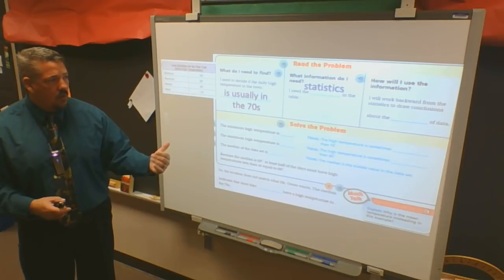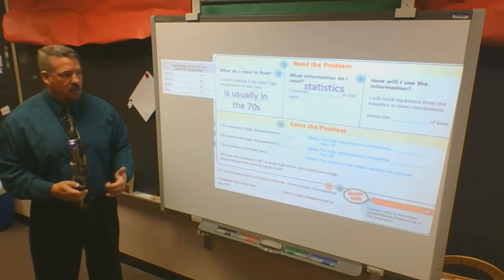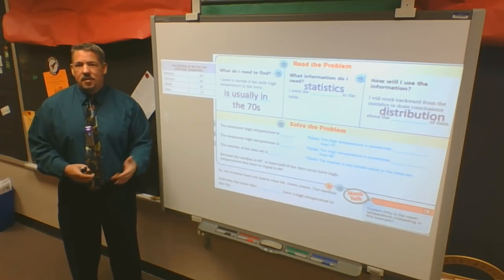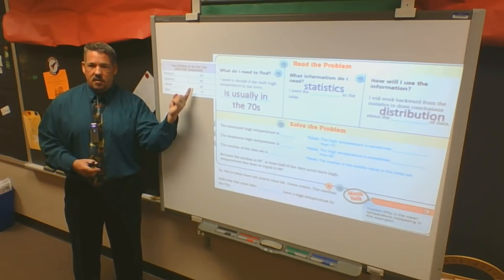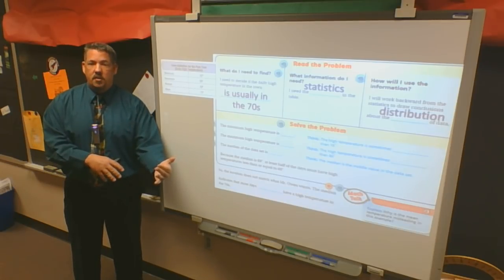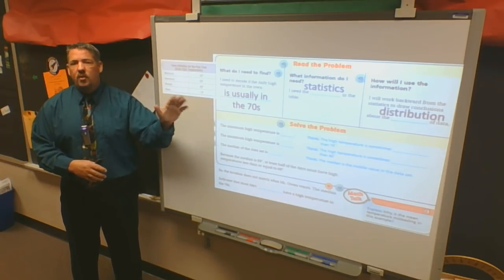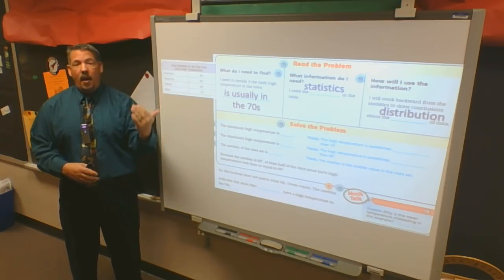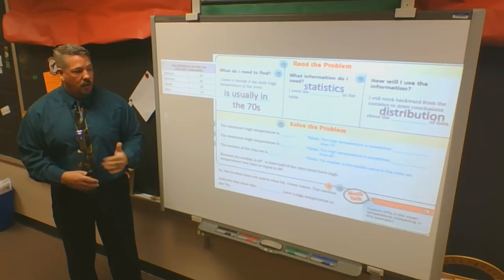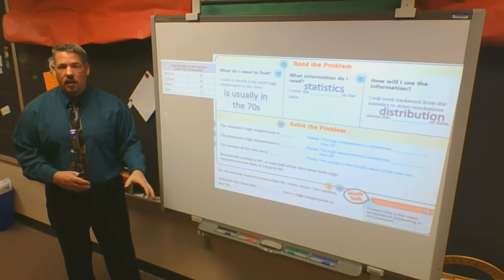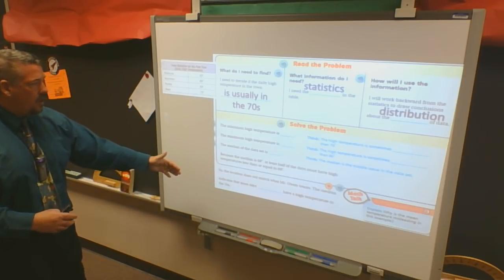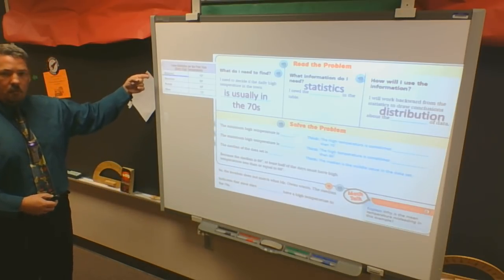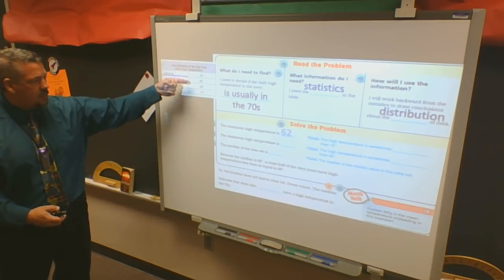I will work backwards from the statistics to draw conclusions about the distribution of data. Well, what does it mean to work backwards? Well, what it means is they didn't give you temperatures for 365 days and make you calculate all this information. They could have. But they said, oh, we'll just give you the answers with these calculators. With that information, then, I can go backwards and think about what that must mean. So in my thinking pathway that they set up for me, the minimum high temperature is what? So I have to look at my chart and find the minimum high. The minimum high is 62 degrees.